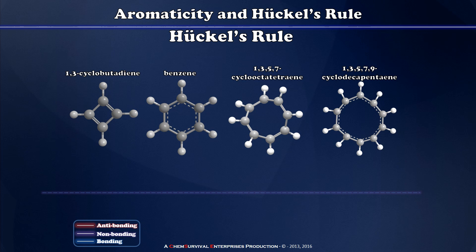Now that we have a working definition of aromatic and anti-aromatic, let's look at a few more cyclic conjugated alkenes to spot the trend that is Huckel's rule. Here I've shown 1,3,5-cyclopentatriene, benzene, 1,3,5,7-cyclooctatetraene, and 1,3,5,7,9-cyclodecapentaene. The Frost circle for 1,3-cyclobutadiene predicts that at least two of its four pi electrons would have to move into non-bonding molecular orbitals to create a conjugated system, so 1,3-cyclobutadiene is anti-aromatic and its pi electrons stay in isolated pi bonds.